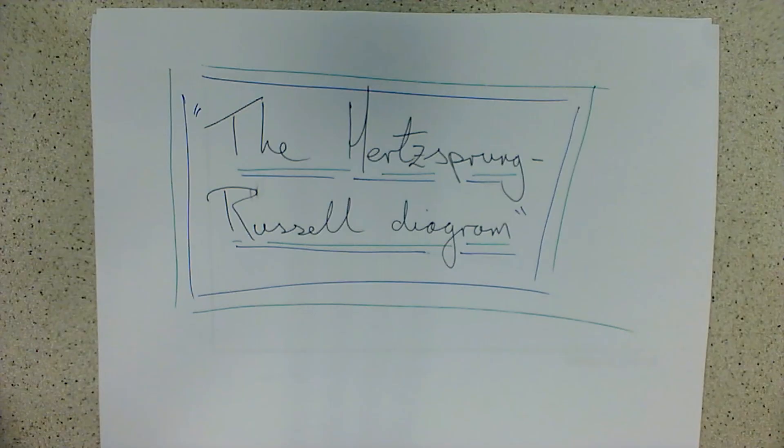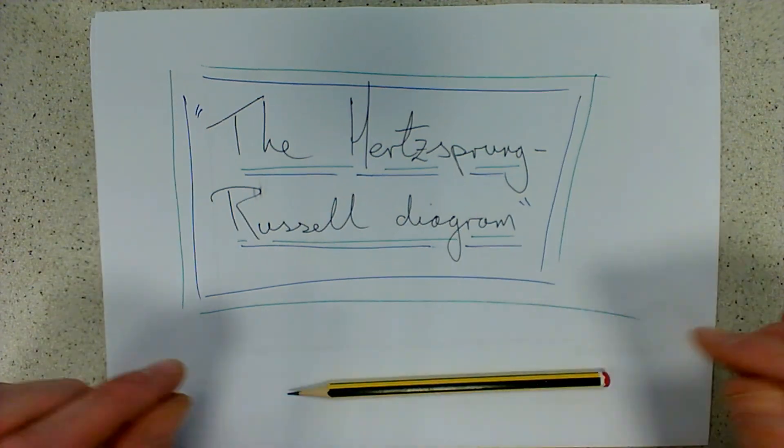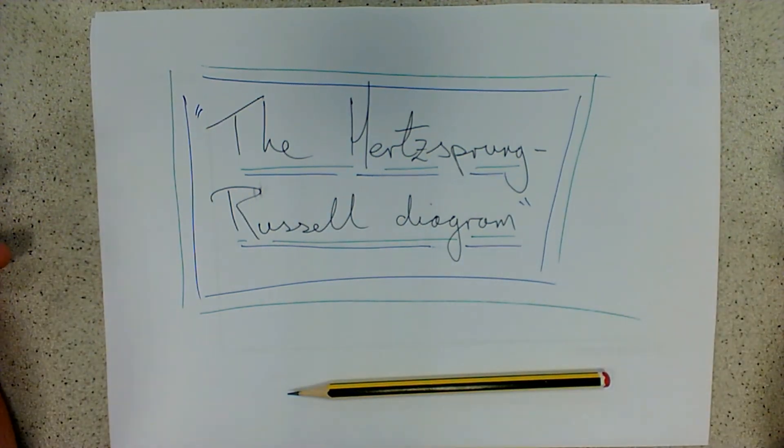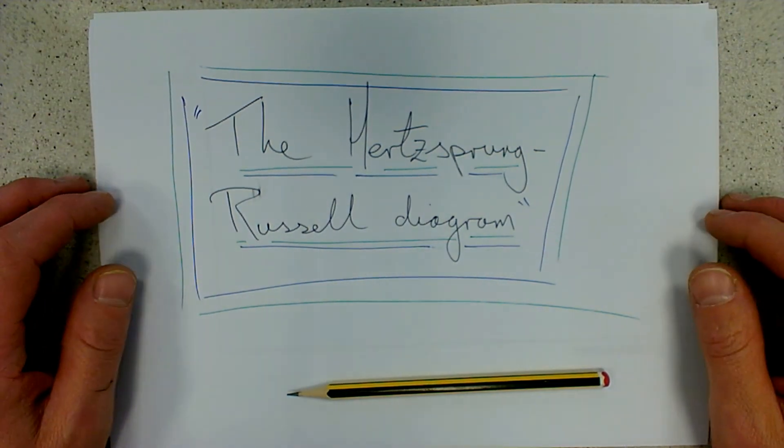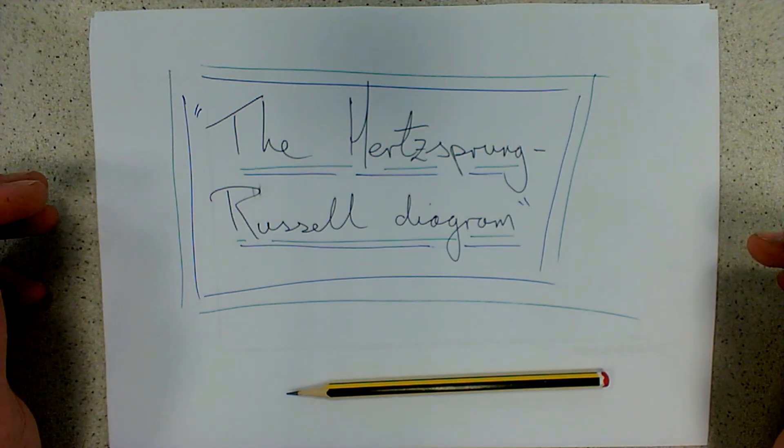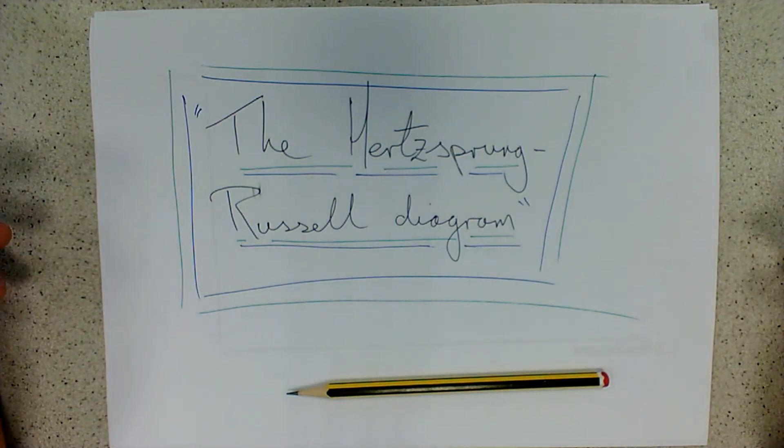The Hertzsprung-Russell diagram is an important diagram that you need to know for your astrophysics A-level. The Hertzsprung-Russell diagram helps us compare the temperature or spectral class of stars with their magnitude or luminosity, and in an exam you may be expected to either draw a diagram from scratch or interpret one that's been provided to you.